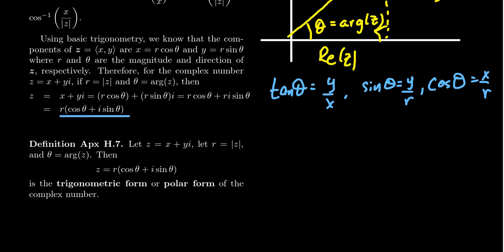So z equals r times the quantity cosine theta plus i sine theta is commonly referred to as the trigonometric form of the complex number — sometimes called the polar form, similar to polar coordinates. This contrasts with the standard form, also called the Cartesian or rectangular form. There are advantages to using one over the other: although it's easy to add and subtract using rectangular coordinates, it's much easier to multiply and divide complex numbers in polar form. This will come from Euler's formula.